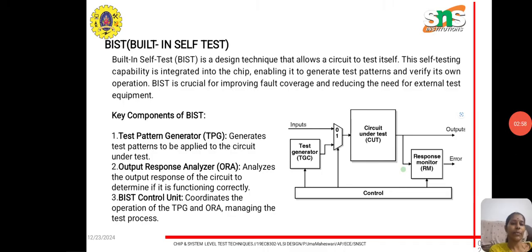The key components of BIST include the Test Pattern Generator (TPG), which generates the test patterns to be applied to the circuit under test. The Output Response Analyzer analyzes the output response of the circuit to determine if it is functioning correctly. The BIST control unit coordinates the operation of the TPG and manages the overall test process.